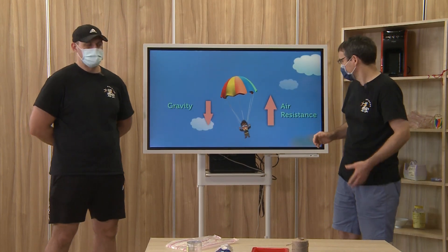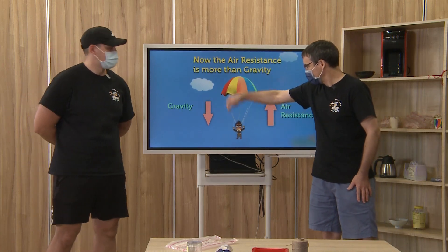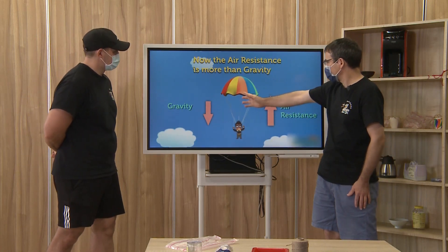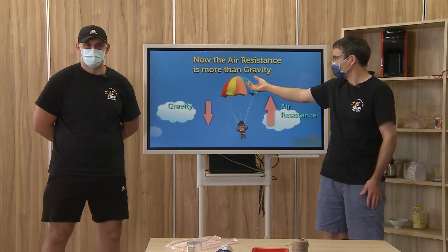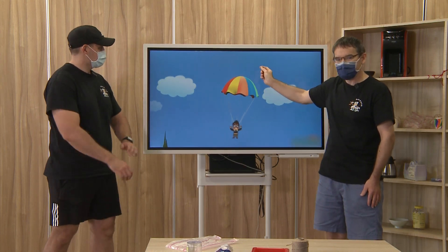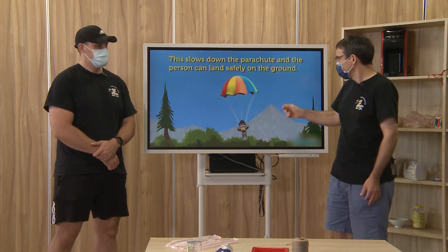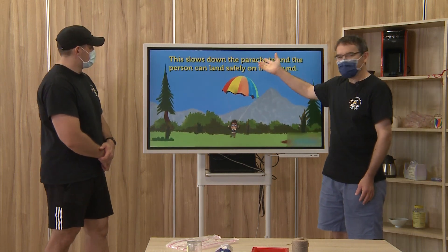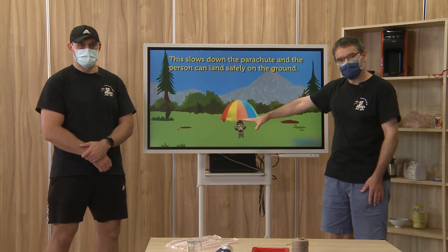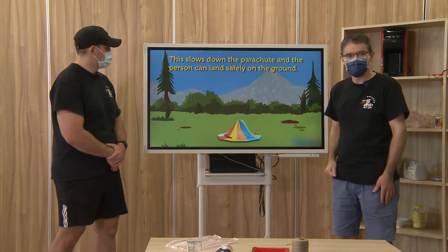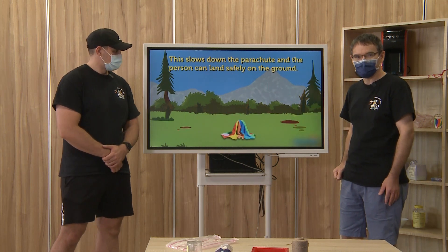So it slows down? Yes. The gravity is going down, the air resistance is going up. So the air is going up with the parachute, and now the air resistance is more than the gravity. And he can slow down — the parachute will slow him down and he will safely land to the ground.